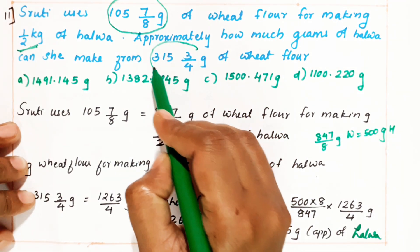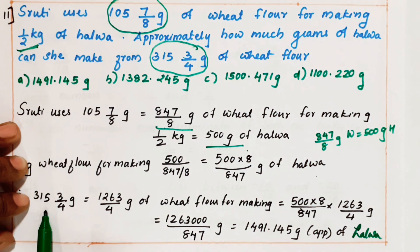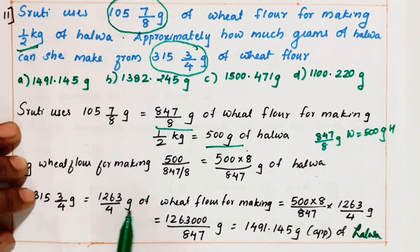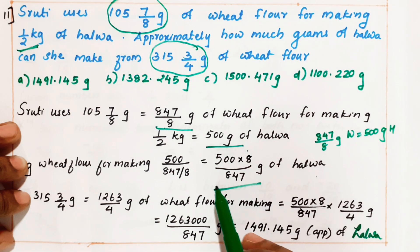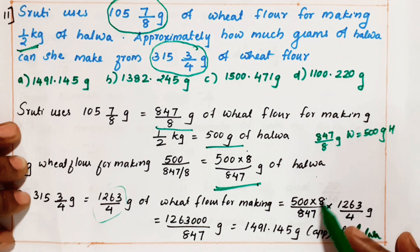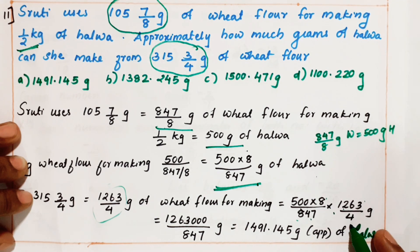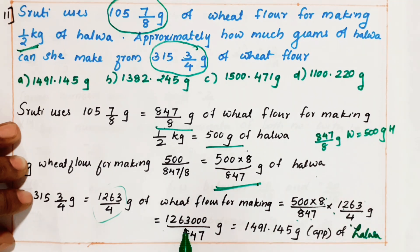Now how much wheat do we have? We have 315 and 3/4. Convert that mixed fraction: 315 3/4 is nothing but 1263/4 grams of wheat flour. How we are converting: 315 into 4 is 1260, plus 3, that is 1263/4 grams of wheat flour. So for 1263/4 grams of wheat, the halwa will be 500 into 8 by 847 into 1263/4. We multiply it — cancelling terms, we get 1,263,000 by 847, giving us 1491.145 grams.